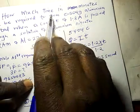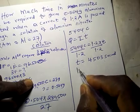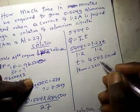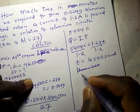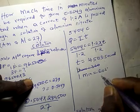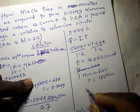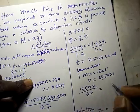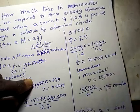We need to convert the time to minutes. We know 1 minute equals 60 seconds. So 4,503 divided by 60 gives us 75 minutes. The answer is 75 minutes.